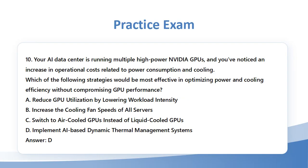Question 10: Your AI data center is running multiple high-power NVIDIA GPUs and you've noticed an increase in operational costs related to power consumption and cooling. Which of the following strategies would be most effective in optimizing power and cooling efficiency without compromising GPU performance? A. Reduce GPU utilization by lowering workload intensity. B. Increase the cooling fan speeds of all servers. C. Switch to air-cooled GPUs instead of liquid-cooled GPUs. D. Implement AI-based dynamic thermal management systems. Answer: D.